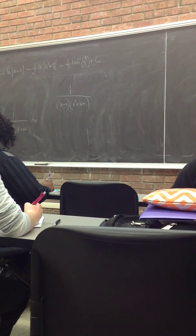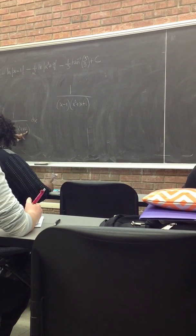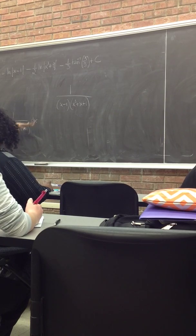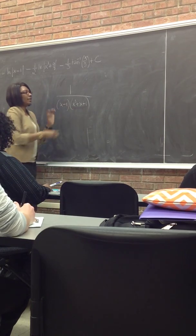Back to x cubed minus 1, it becomes x minus 1 times x squared plus x plus 1. It has a difference of two cubes. This one, remember, we can't write it, so we leave it like that.